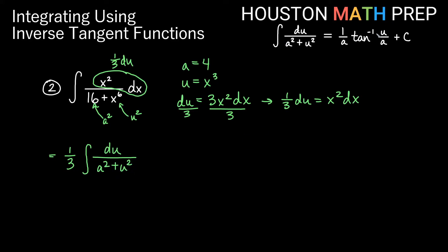So that will be du over a squared plus u squared. Now we just write out what the definition tells us. I have 1 third out in the front. This becomes 1 over a inverse tan u over a. So 1 over a inverse tan u over a plus my constant.